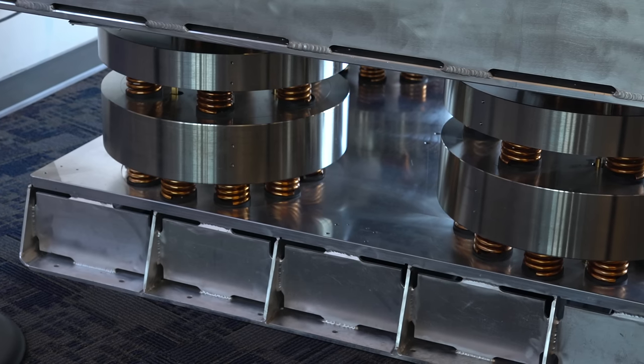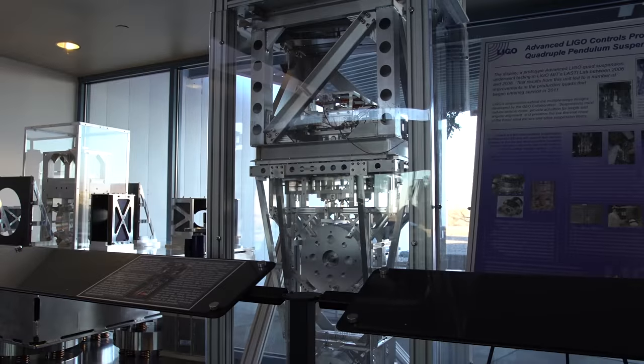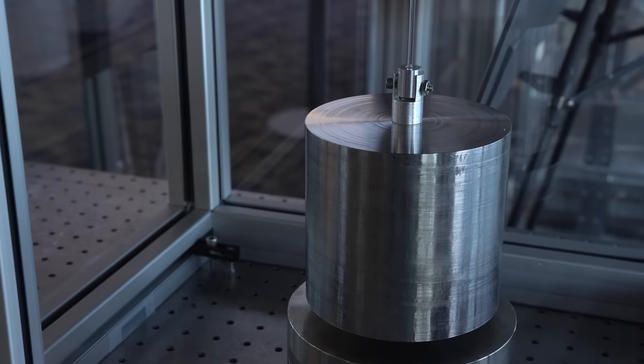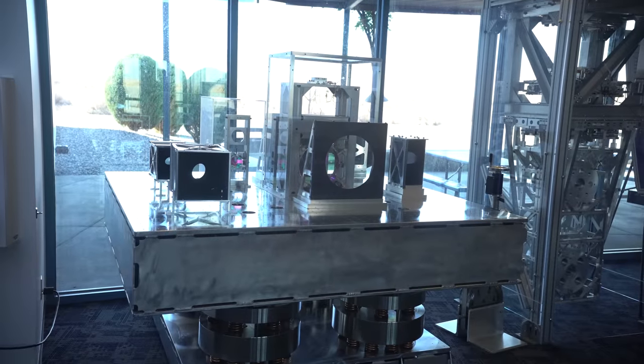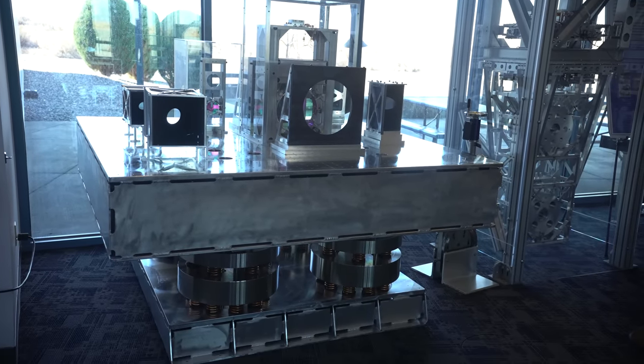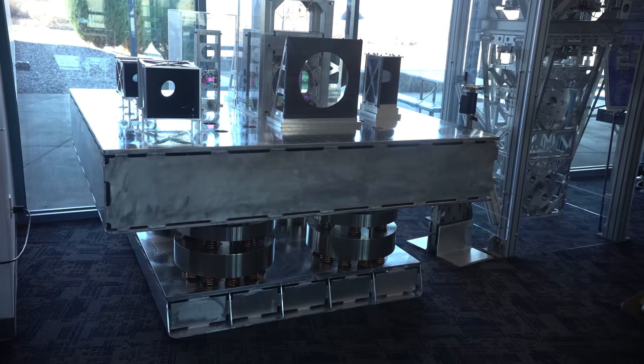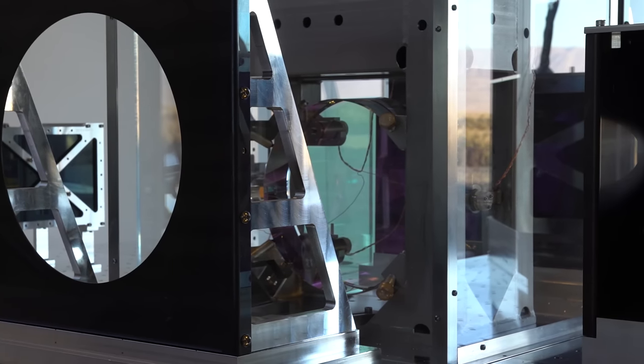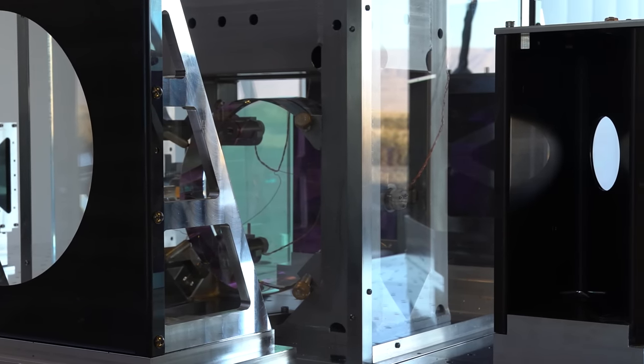They obviously weren't done there. In the newer version, the mirror is hung from four pendulums by glass fibers. And that is far from the end. On the bottom of the table, there's actually a seismometer that measures any movement in the ground, and then uses that information to manipulate voice coils and static electricity to actively cancel out the vibrations coming from the ground.